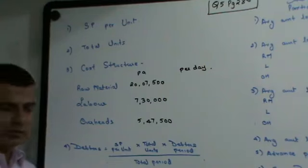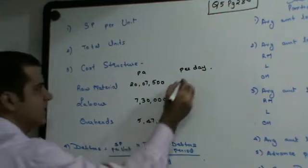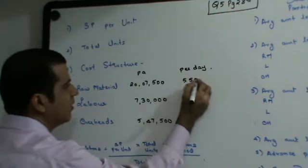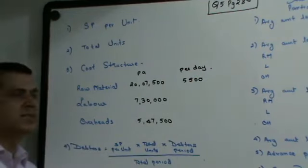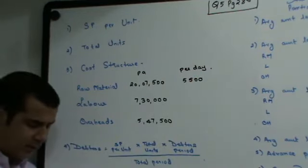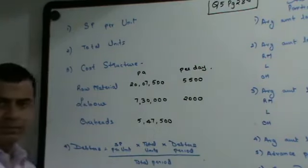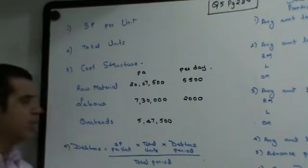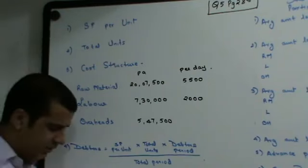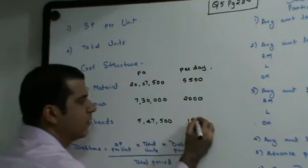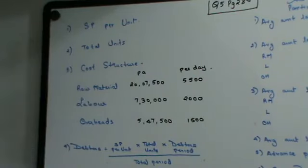So 20,7,500 divided by 365 will give you 5,500. Similarly, 7,30,000 divided by 365 will give you 2,000 and 5,47,500 divided by 365 will give you 1,500. So this is your data per day.